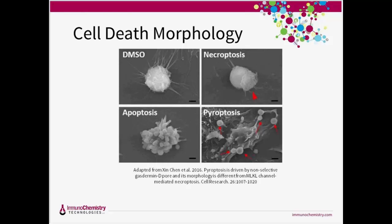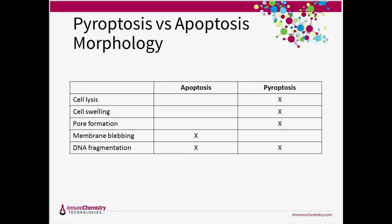If we look at the image shown on this slide, we can note the clear morphological differences between the methods of cell death. On the apoptotic cell, we can see the intact membrane blebbing, compared to the ruptured membrane of the pyroptotic cell next to it. Continuing to compare and contrast apoptosis and pyroptosis, this table lists the morphological characteristics of both methods of cell death — the apoptotic cell blebbing versus the pyroptotic cell swelling and lysing.